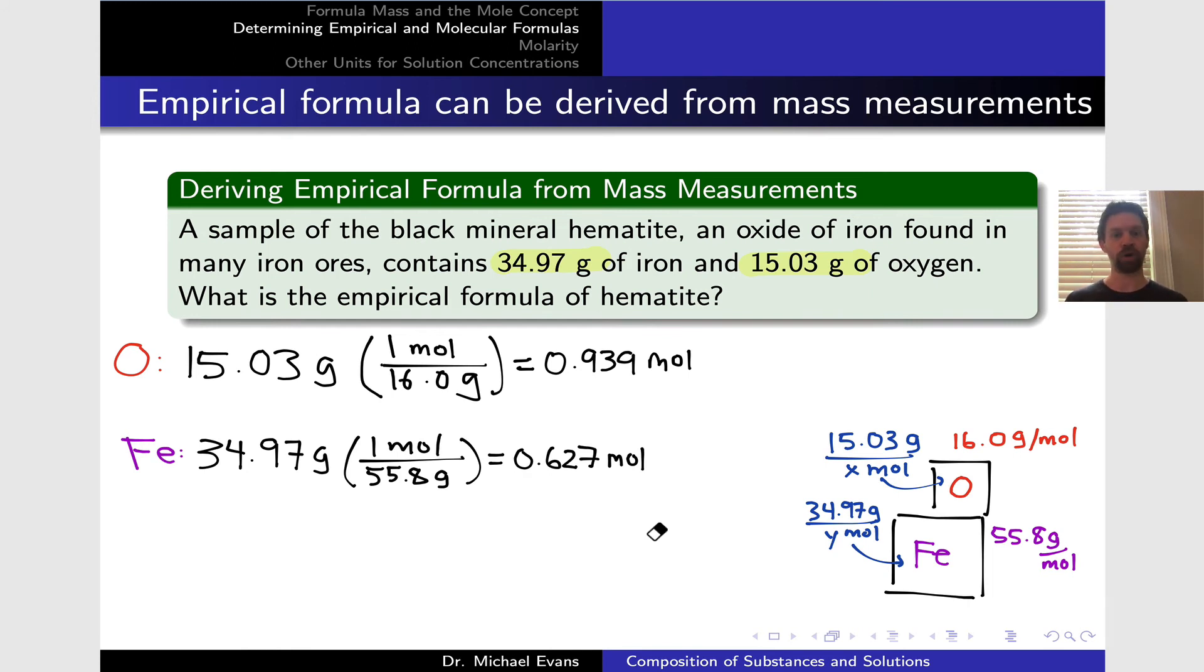The next step is to divide by the smaller number of moles. When we do that, we arrive at 1.5 for oxygen and 1 for iron. This means for every one mole of iron in the compound, there are 1.5 moles of oxygen atoms. We could write the empirical formula as Fe1O1.5, but that doesn't include whole numbers. To fix that, we multiply by 2, getting that 1.5 up to a whole number. We arrive at the final empirical formula: Fe2O3. Notice our process: we took masses to moles in black, divided by the smaller number of moles in green, and in purple we scaled up those coefficients to get whole numbers in the final empirical formula.